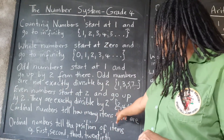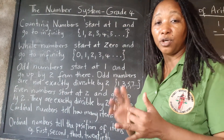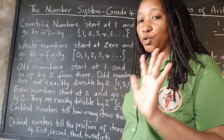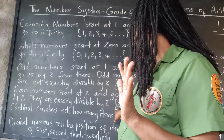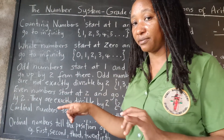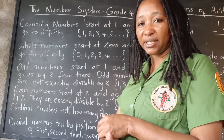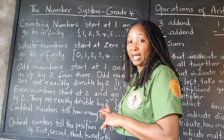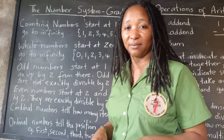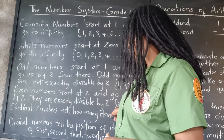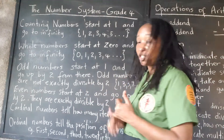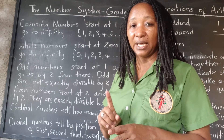Even numbers will always end with zero, two, four, six, or eight. Once you know those ending digits, if a number ends with a zero, two, four, six, or eight, we know we're dealing with an even number. It does not matter how big it is. Just look at the digit at the end. If it ends with a zero, two, four, six, or eight, it's even.